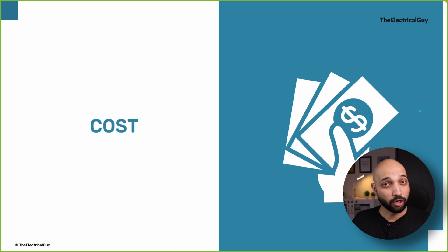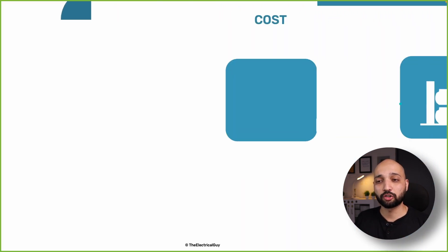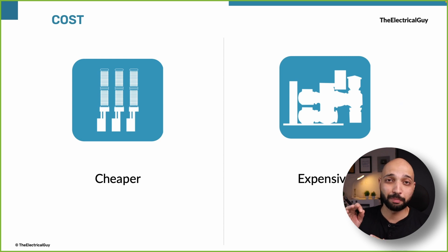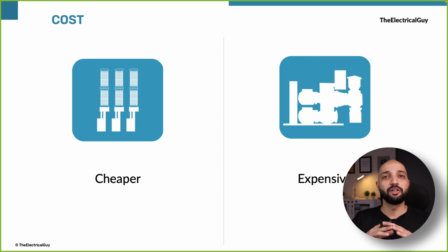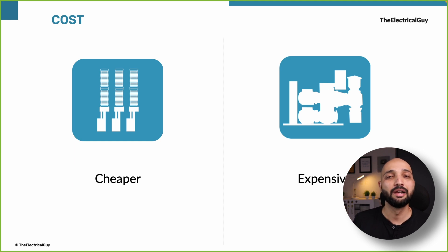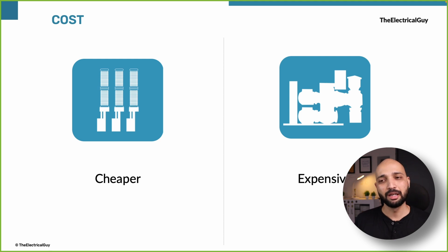Now moving on to the cost topic. GIS scores more in the majority of aspects we have seen, but when it comes to cost, GIS is the most expensive technology available, and AIS is the cheapest. Hence there is no question why 70% of substations worldwide are still using AIS technology. This is one of the key factors to consider when selecting between GIS and AIS.